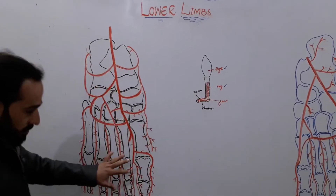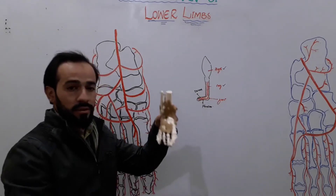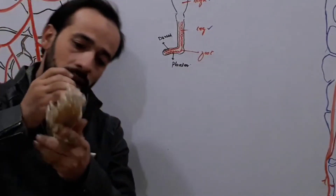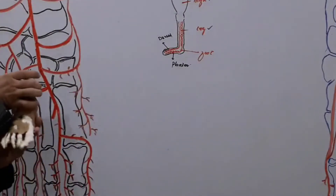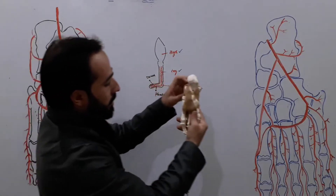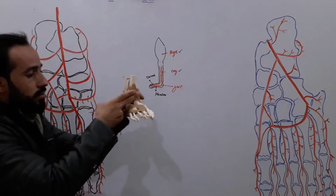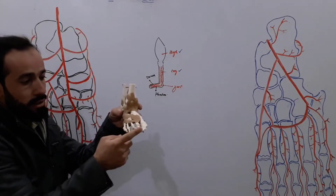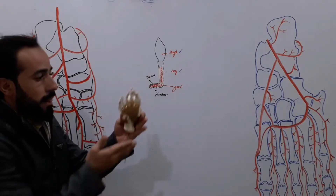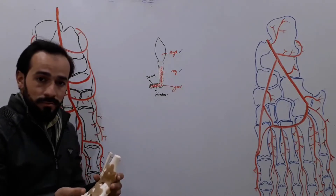This diagram represents the foot showing its dorsal surface — this is the right foot. This surface is the dorsal surface and that is the plantar surface. We will discuss the branches of arteries present in the dorsum of the foot up to the phalanges, and the branches present in the plantar surface, to complete the blood supply of the lower limb.